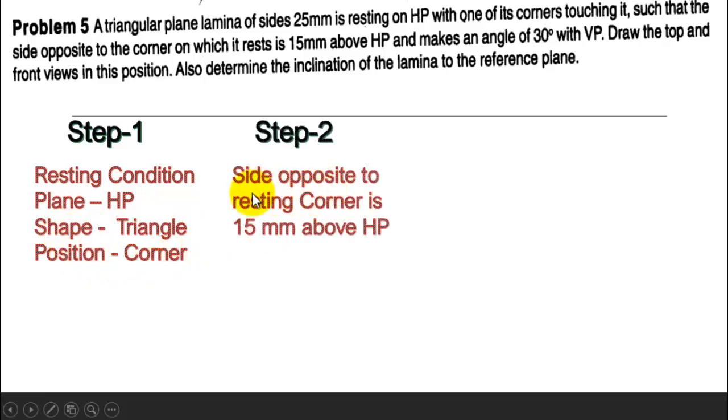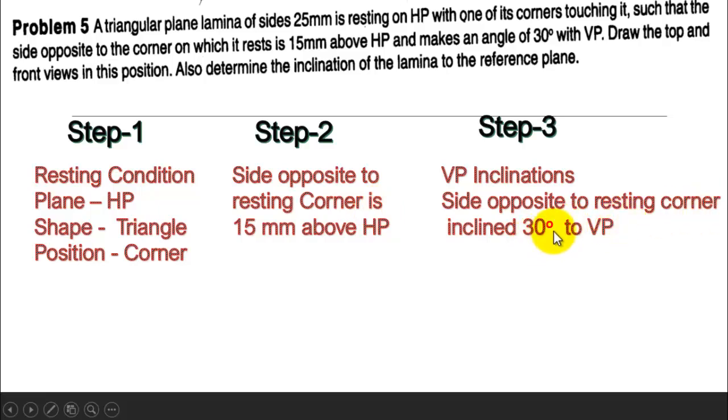In the second step, they don't give surface inclination. They give that the side opposite of the resting corner is 15 mm above HP. And the last step, the same opposite edge is inclined to VP at 30 degrees.